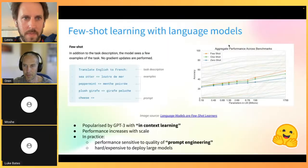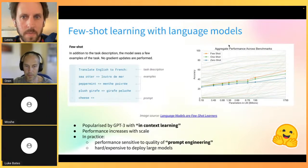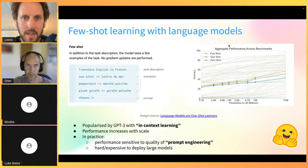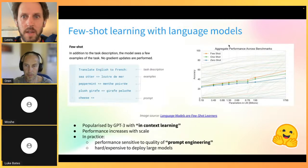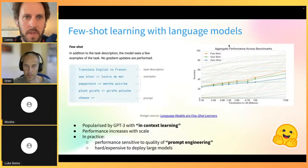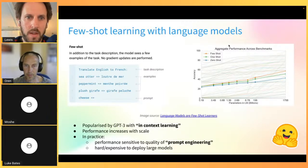Let's start by talking about few-shot learning with language models. This is a fairly old idea, but it was the arrival of GPT-3 by OpenAI that really popularized it. In their paper, they described few-shot learning as basically describing a natural language task, providing a few examples of what that task looks like, and then getting the model to auto-complete the prediction from that prompt.